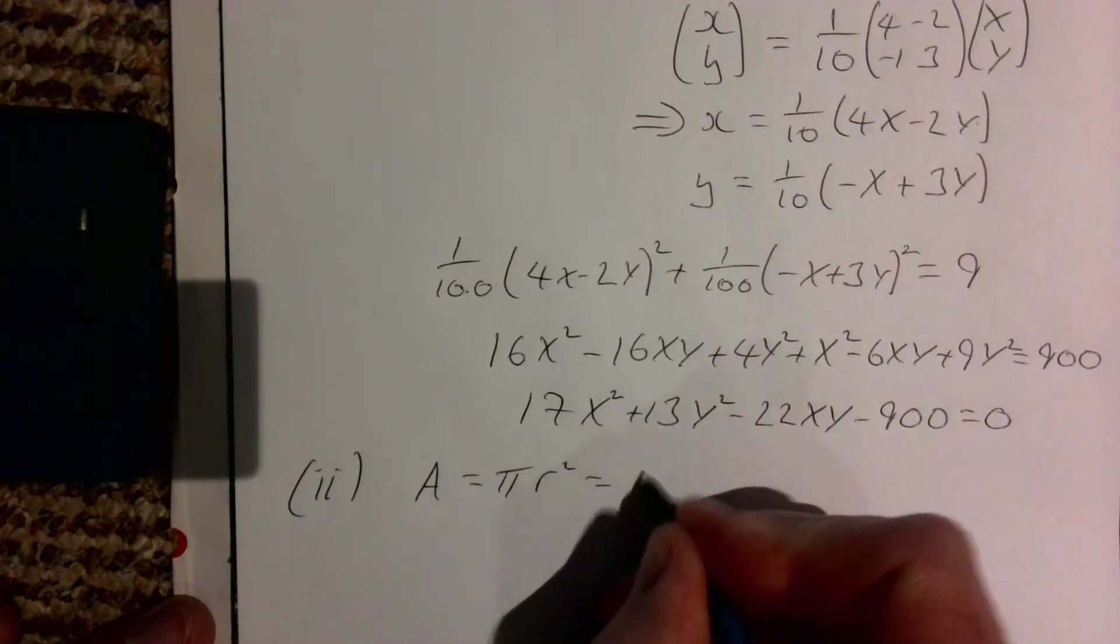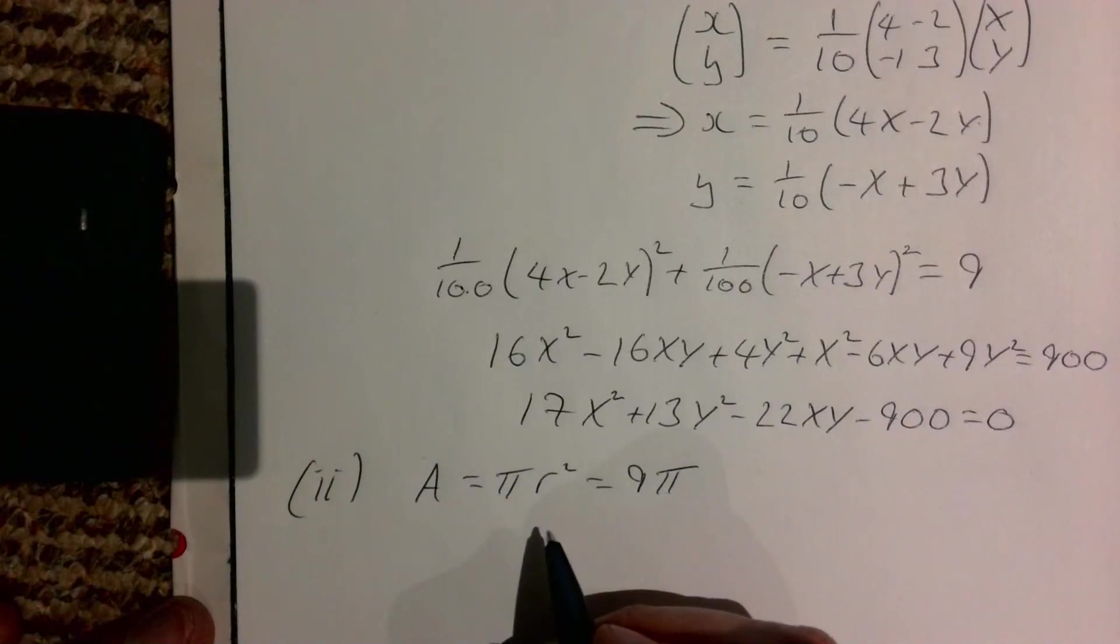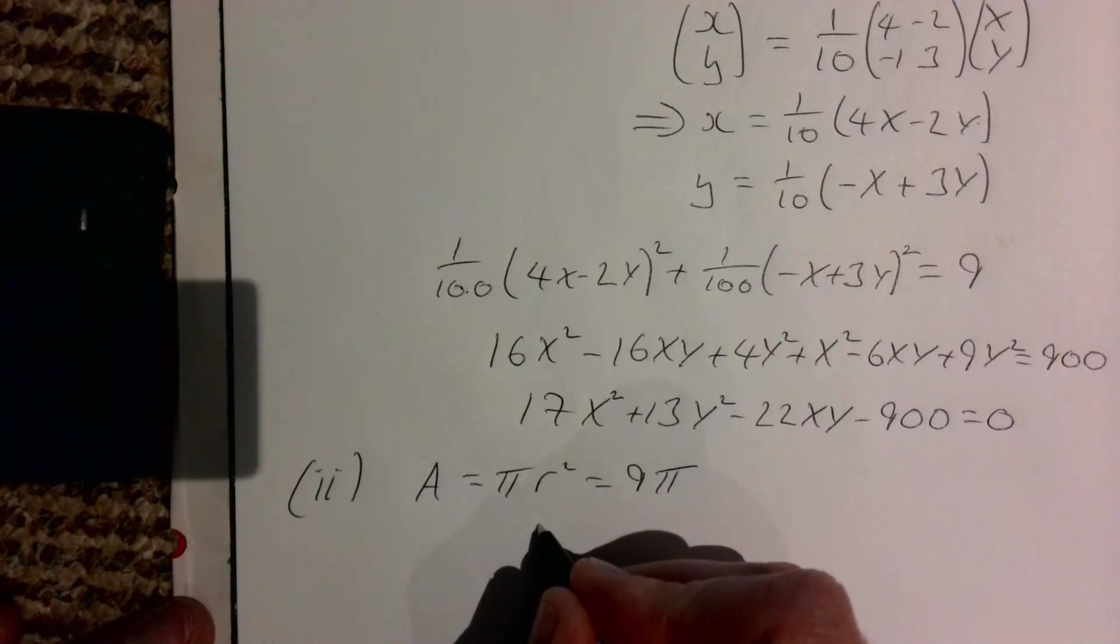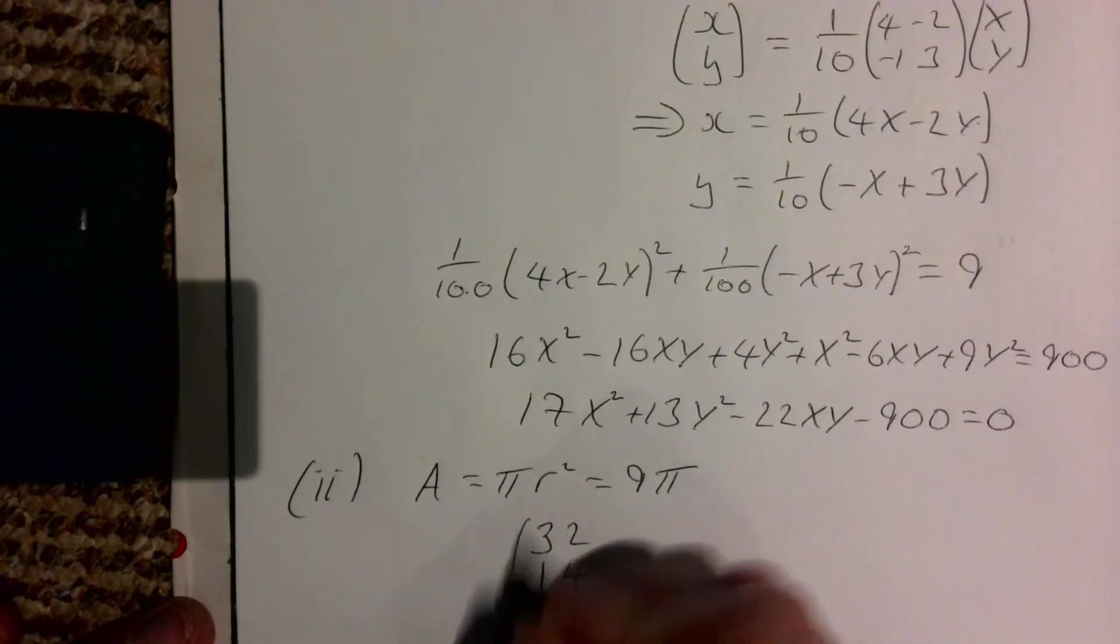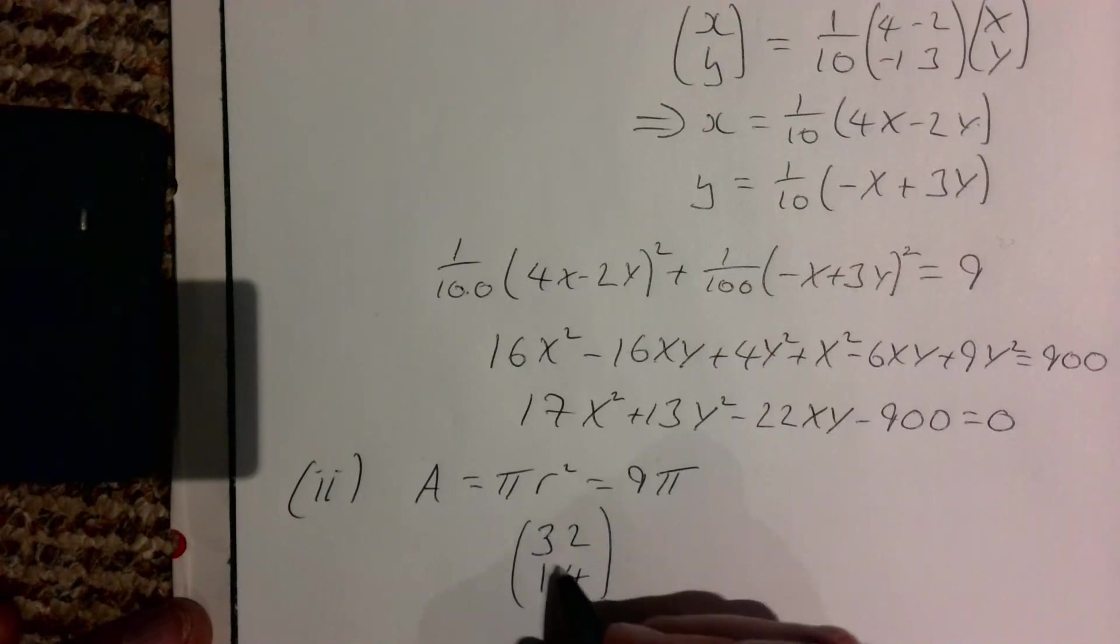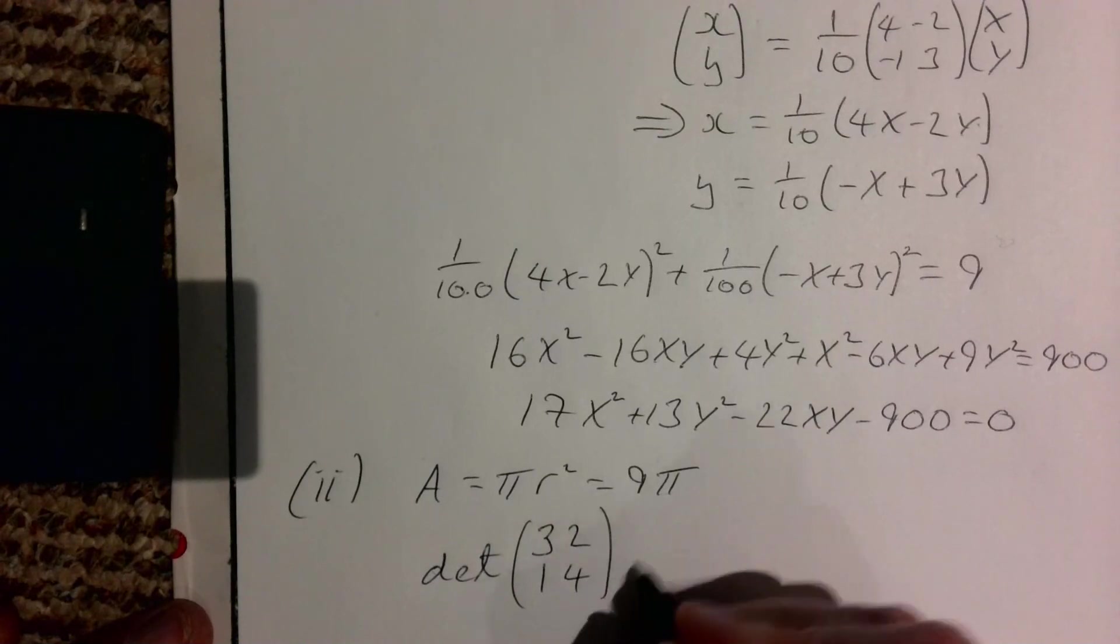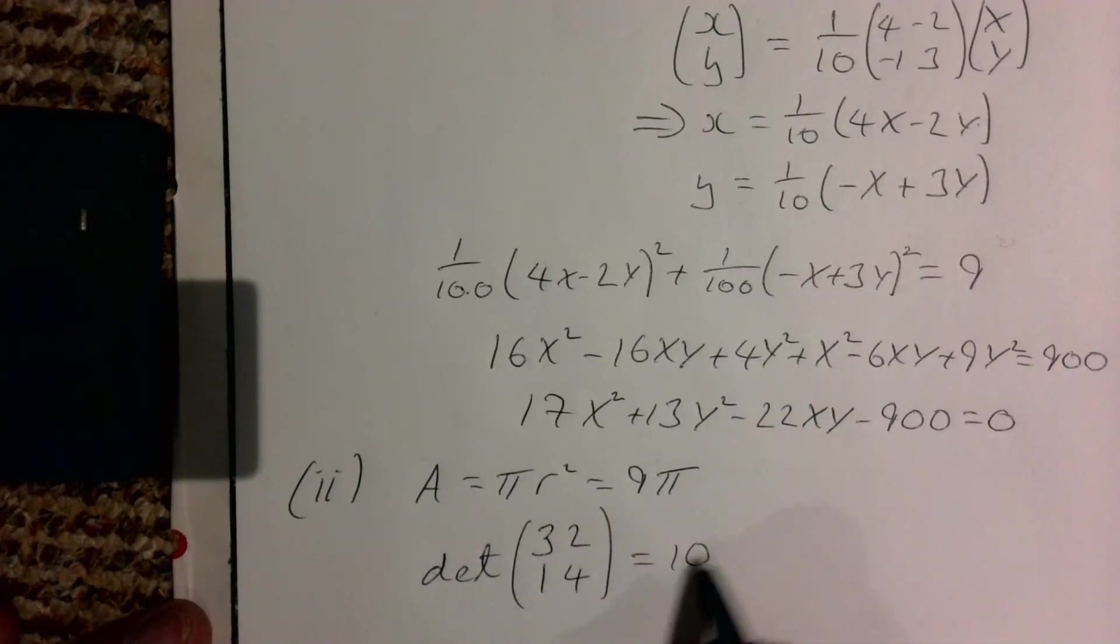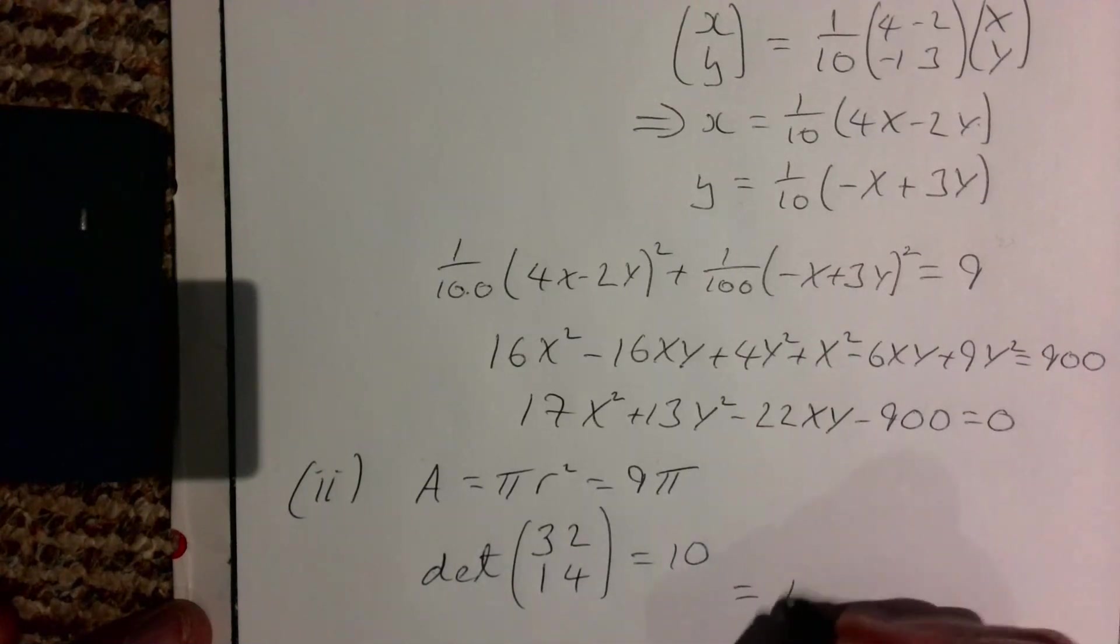And we have used the matrix (3 2; 1 4), and hopefully you remember that the determinant gives you the scale factor. And so the determinant of (3 2; 1 4), we worked out earlier, was going to be 10. There's 10 for this, and we multiply that by 9π. So the area of the new shape then must be 90π.